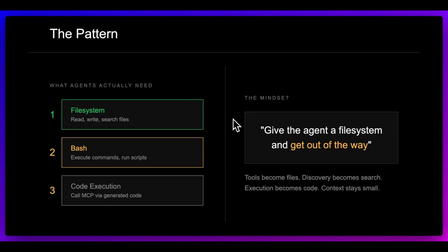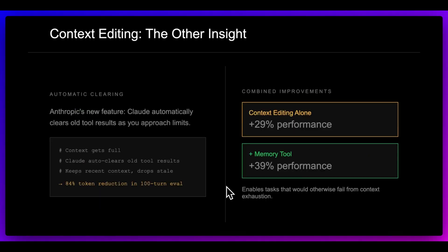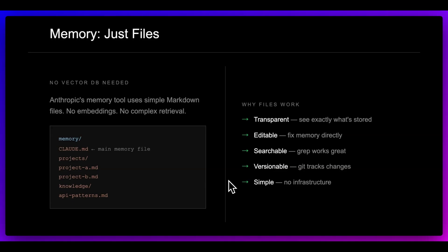Just to run through the pattern quickly on how you could use this within CloudCode: you have access to the file system — it can read, write, and search files. It has bash as well — execute commands, run scripts, push things to Git. And now we can have code execution to call the MCP servers. The mindset is: give the agent a file system and get out of the way. Tools become files, discovery becomes search, execution becomes code, and context remains small. Another interesting insight from Anthropic was that Claude can automatically clear old tool results as you approach your limits — progressively removing them from context as they become less relevant. In terms of memory, think of it as just files: your CLAUDE.md, different markdown files, scripts, skills. No embeddings, no complex retrieval. Just keep it simple — we can read it, edit it, search it. If it's simple for us, it's going to be simple for agents.